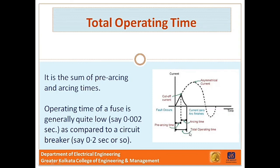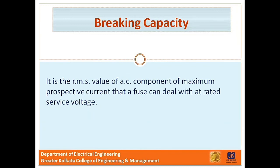It may be noted that the operating time of a fuse is generally quite low compared to the circuit breaker — this is an added advantage of fuse over a circuit breaker. A fuse in series with a circuit breaker of low breaking capacity is a useful and economical arrangement to provide adequate short circuit protection, because the fuse will blow under fault conditions before the circuit breaker has to operate. The last term is breaking capacity: it is the RMS value of the AC component of the maximum prospective current that a fuse can deal with at a rated service voltage.